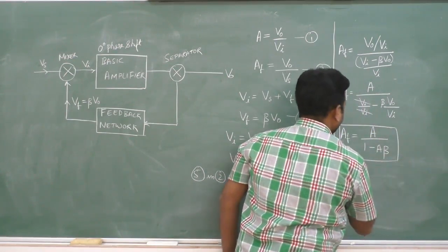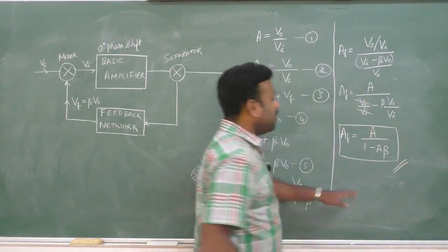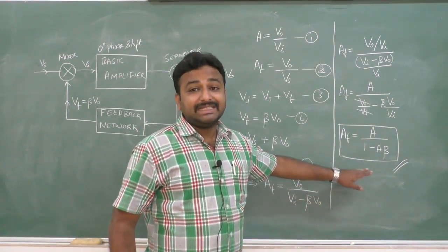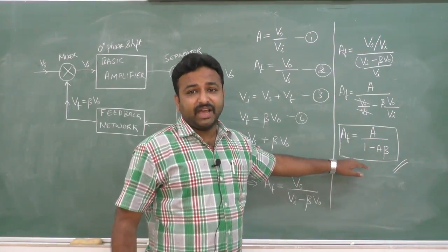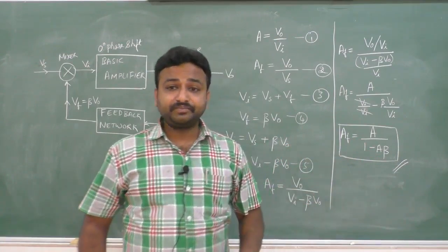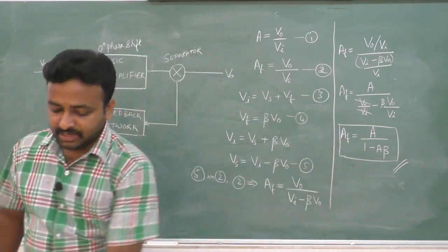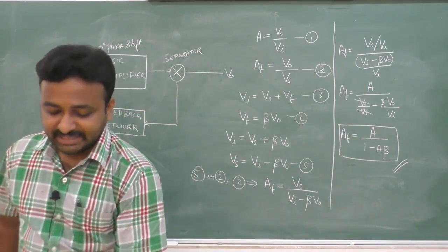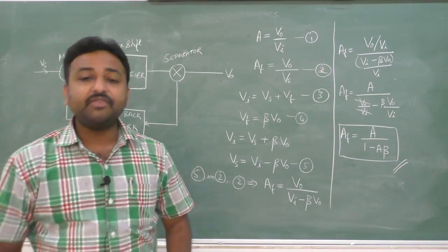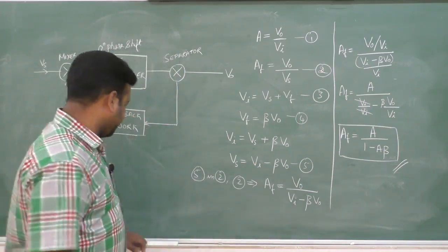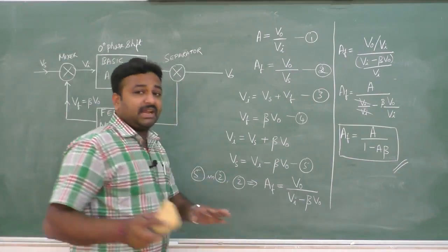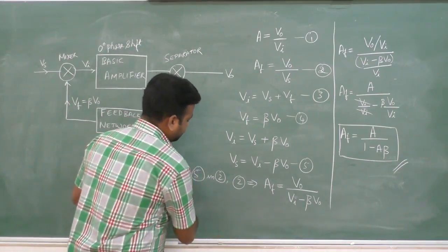This is the expression for voltage gain of the positive feedback amplifier, or the expression for the gain of the oscillator: AF equals A divided by (1 minus A beta). Now let us study about the stabilization of oscillations - how and why we get stable oscillations.